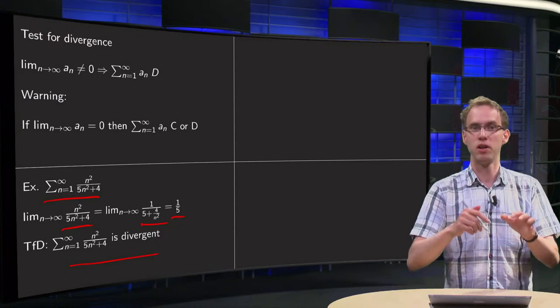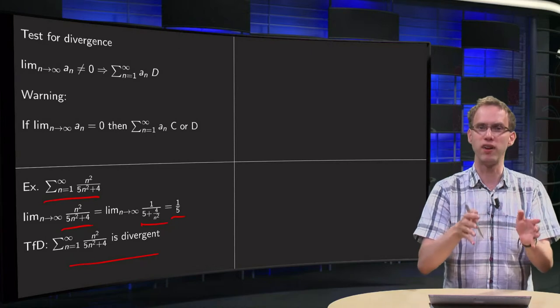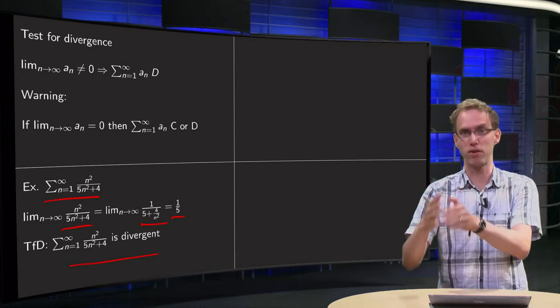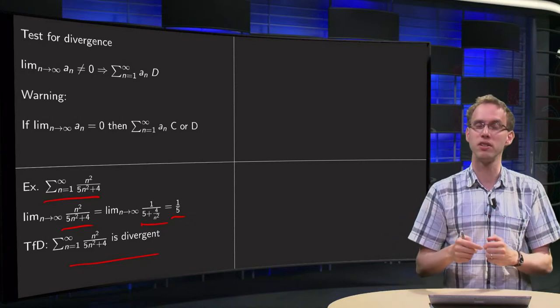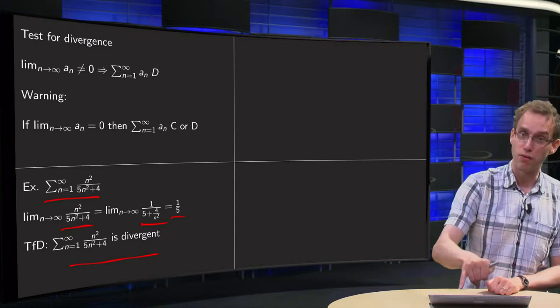Intuitively that is clear, because we start with some terms—the sum of the first 100 terms or whatever is always finite—and then eventually we start to add 1 over 5 plus 1 over 5 plus 1 over 5 infinitely many times, so that will blow up. So far so good.